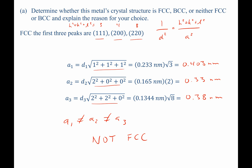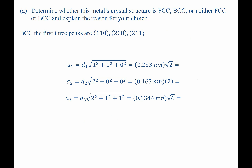Now let's look at BCC. For BCC, the first three peaks are 110, 200, and 211 — in all cases, H plus K plus L adds up to an even number. Calculating the lattice parameter for each: the first reflection gives 0.3295 nm, the second gives 0.330 nm, and the third gives 0.329 nm. These are all approximately equal, so this metal must be BCC.